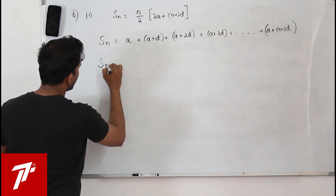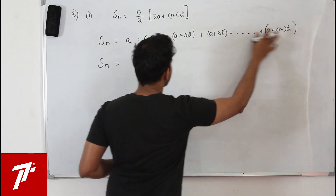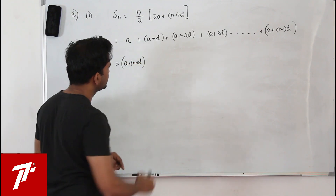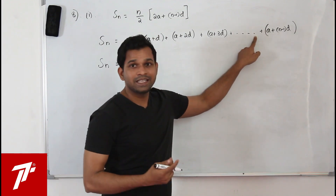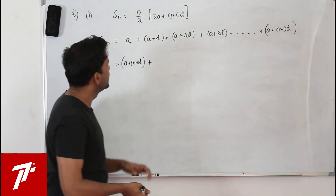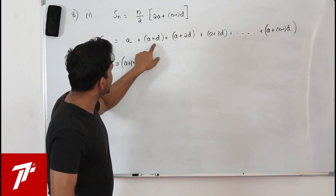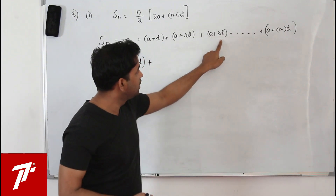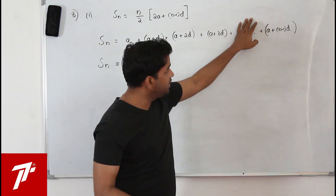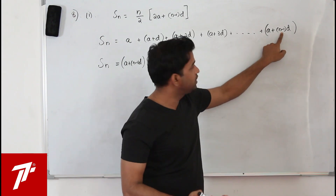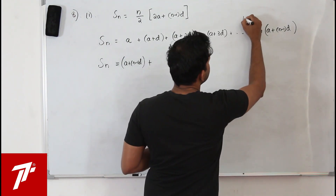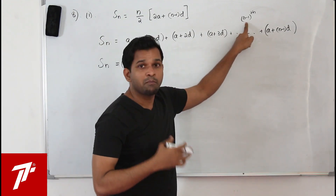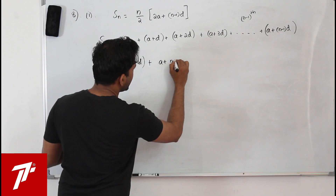Next, I am going to flip this series — write it in reverse order. I put the last term first: a plus n minus 1 into d. The second-to-last term, the n minus 1th term, will be a plus n minus 2 into d, because each term's coefficient of d is one less than its position minus one.